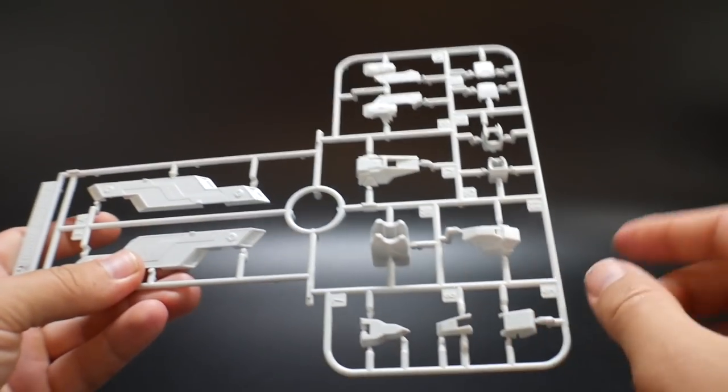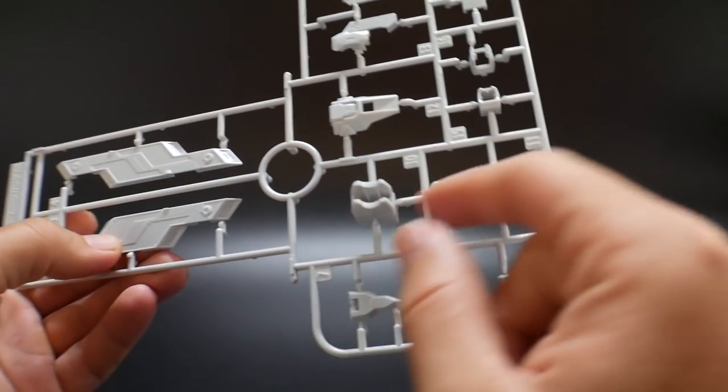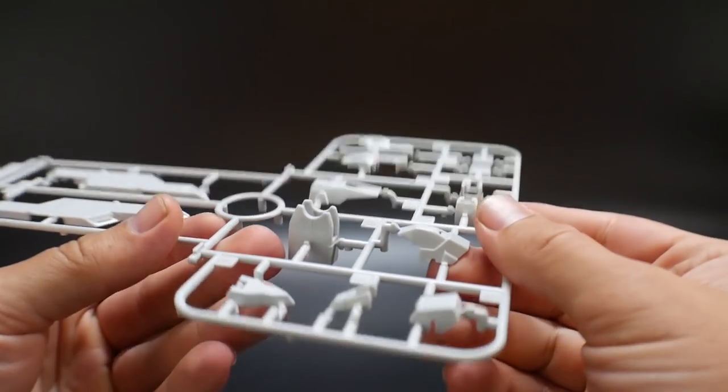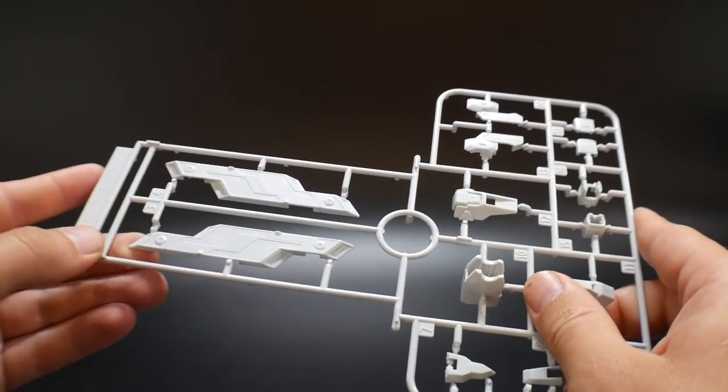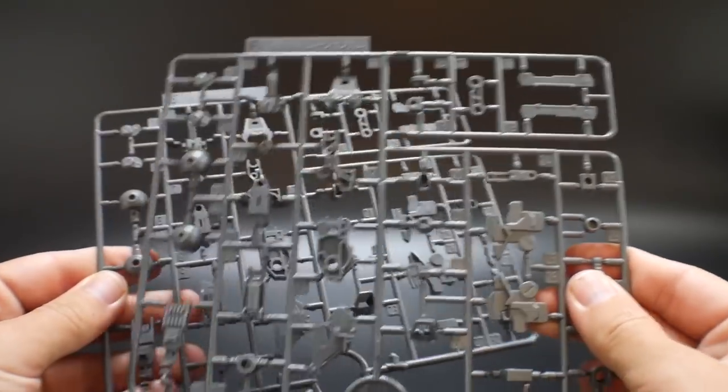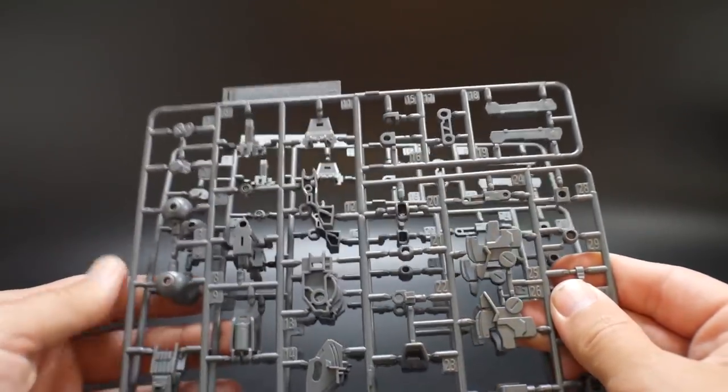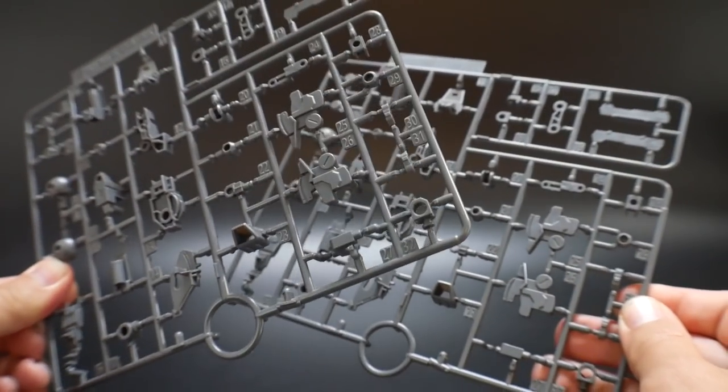And here is runner A2. A2 is going to have just more parts for these little funnels. You got some side skirt action going on, legs. So just more of the white parts that's going to be for the kit. And I forgot to mention you actually get two runner E's vice D1. So it's just going to be parts for the inner frame.